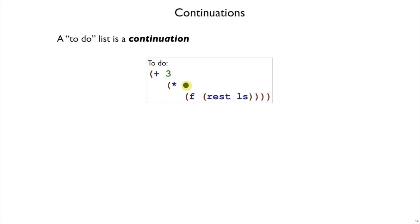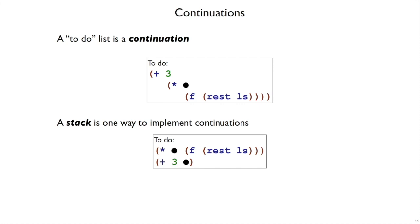While we can represent a continuation this way, this continuation is really two items on that to-do list. It is get around to doing a times, but then also get around to doing a plus. So we might represent this, instead of nested expressions, as a to-do list, or a stack, because we're going to keep adding things to the top of the to-do list and removing things from the top of the to-do list, working our way down into the list.